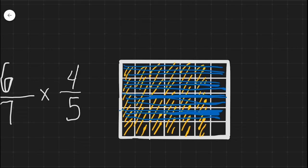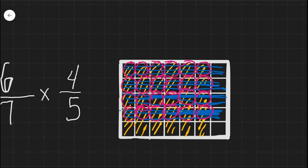Now to identify the answer, it is everything that has the blue and the yellow. So we have one, two, three, four, five, six, seven, eight, nine, ten, eleven, twelve, thirteen, fourteen, fifteen, sixteen, seventeen, eighteen, nineteen, twenty, twenty-one, twenty-two, twenty-three, twenty-four.